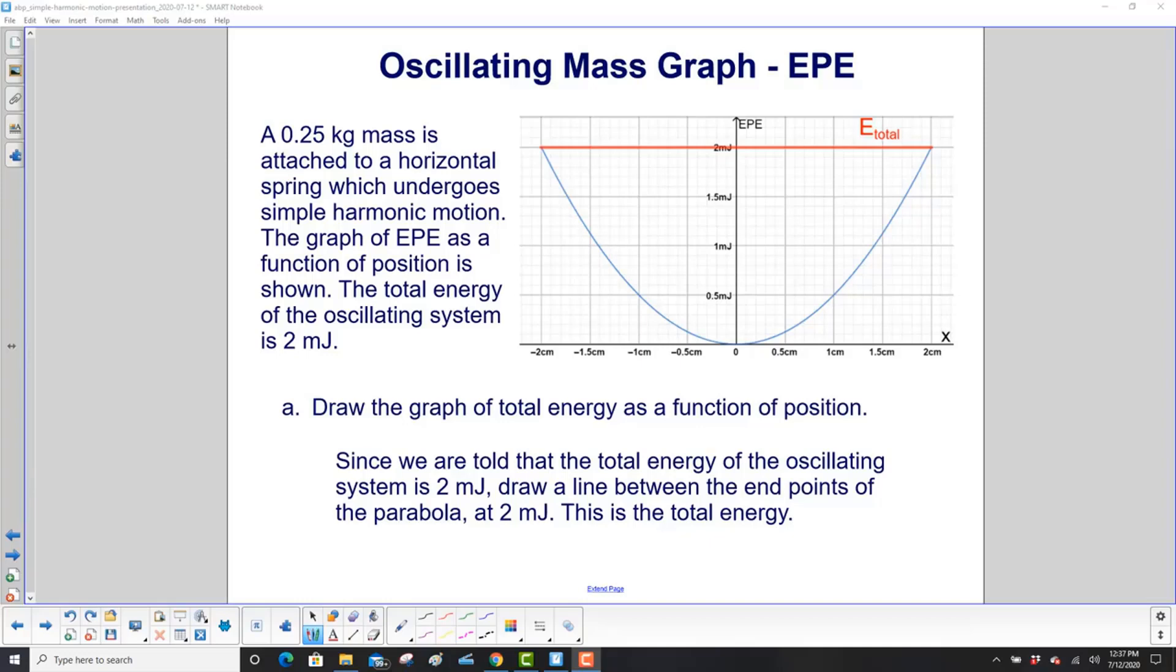Draw the graph of total energy as a function of position. Look at this here. Total energy of the oscillating system is 2 millijoules. We're not told that there's any friction, so that total energy will stay the same at every point in the movement of this oscillating mass. So we draw a horizontal line at 2 millijoules.